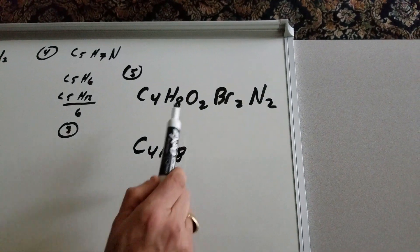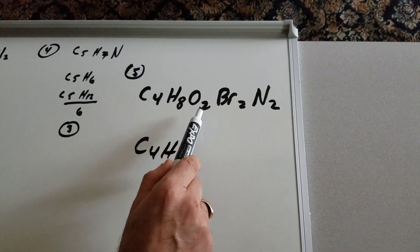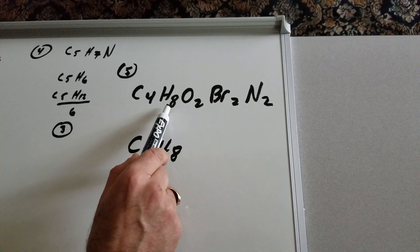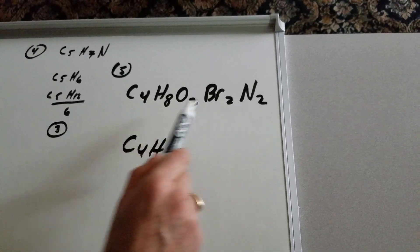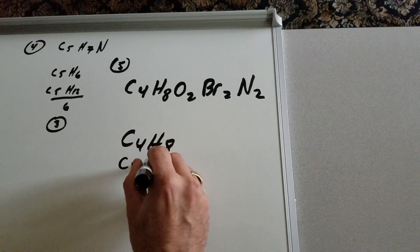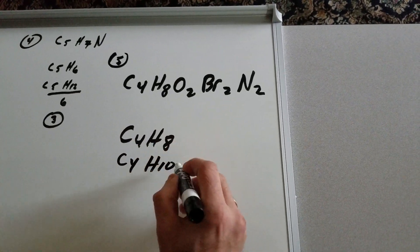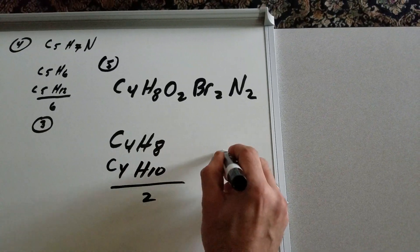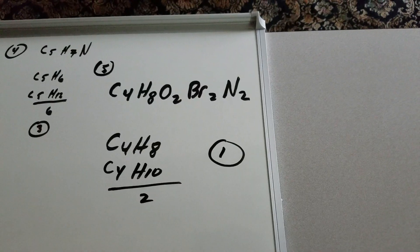One more time. Do nothing with the oxygen. Okay. Bromine, add 2 Hs. That brings this up to a 10. Subtract 2 Hs. Brings it back to an 8. So, underneath, you get a C4H10 for the nearest alkane. Subtract. And, as you can see, you get a 1.